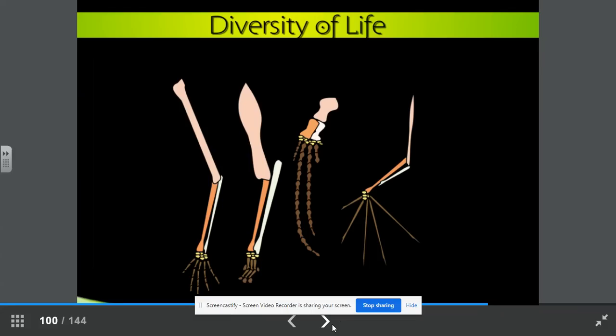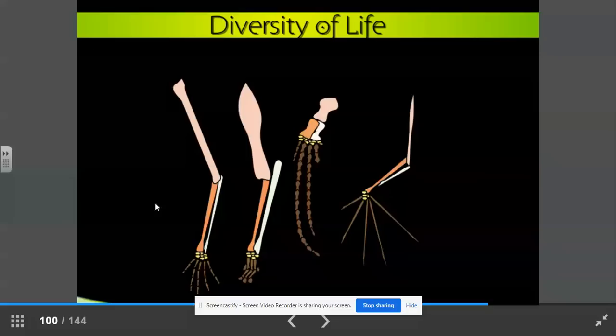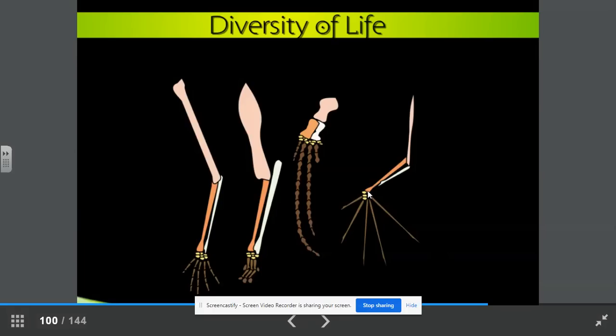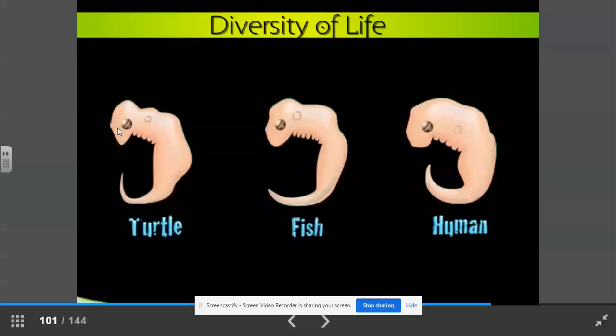So look at the similarities in these structures. We have, it looks like a human, a dog, a whale, and a bat. Look at these embryos. We have a turtle, a fish, and a human. At this stage of development, they look strikingly similar.